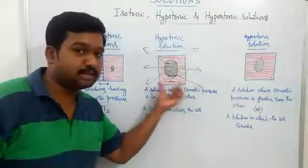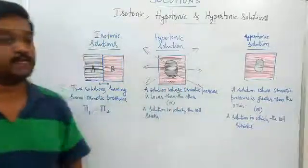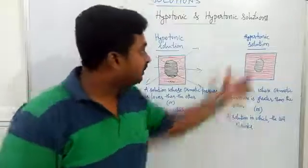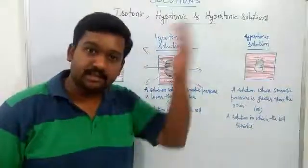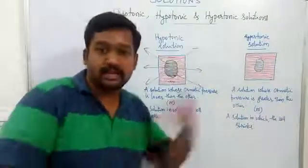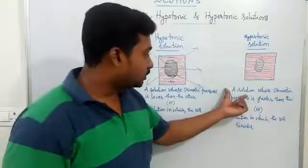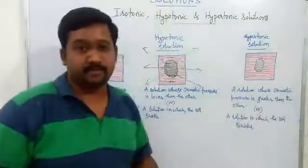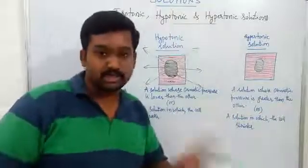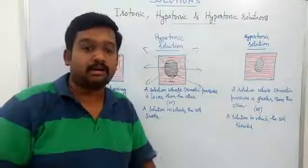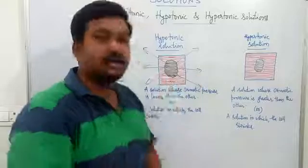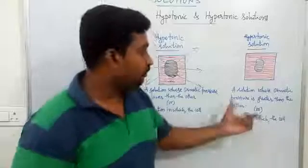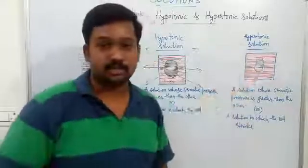The red-colored part in this diagram indicates the hypotonic solution. The third case is hypertonic solution. The word 'hyper' indicates higher — it is easy to remember, as hyper is like higher. So a hypertonic solution is one whose osmotic pressure is greater than the other. Whenever we have two solutions separated by a semi-permeable membrane, the one with greater osmotic pressure, or at constant temperature greater concentration, is called the hypertonic solution.